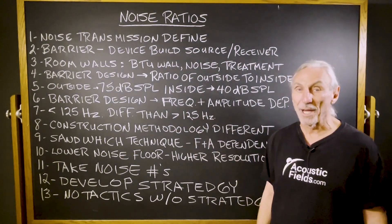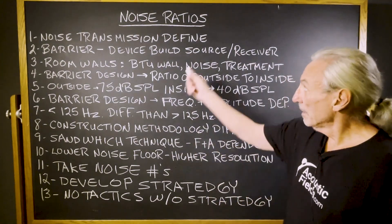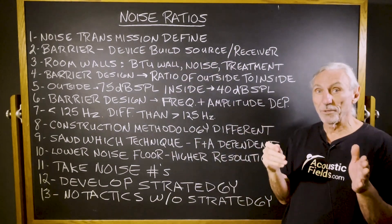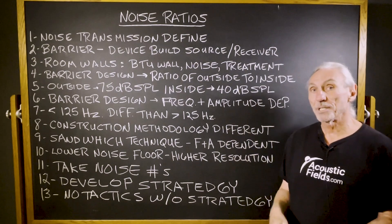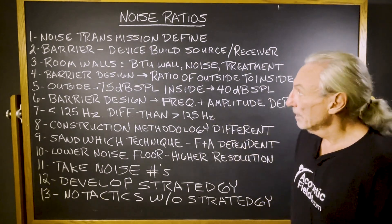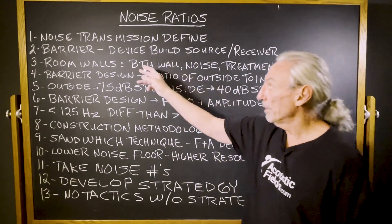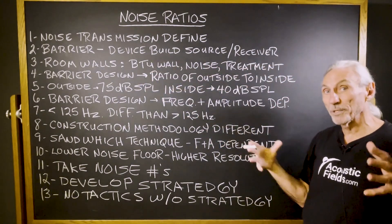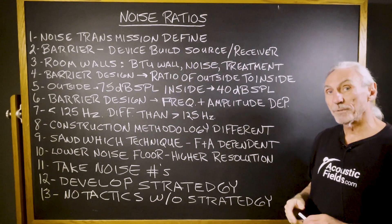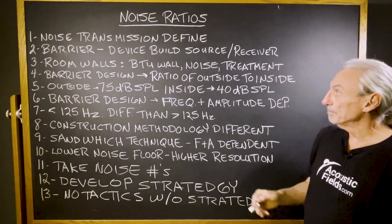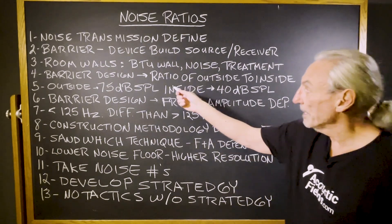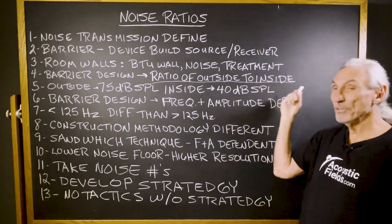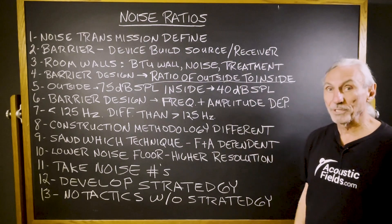Noise transmission is kind of that two-way valve. A barrier is a device we build between the source of the noise and the receiver — by definition, it's called a barrier. We have three walls to consider: the BTU wall, the noise wall, and the treatment wall. The barrier design is always a ratio of the outside to inside noise, or inside to outside noise.